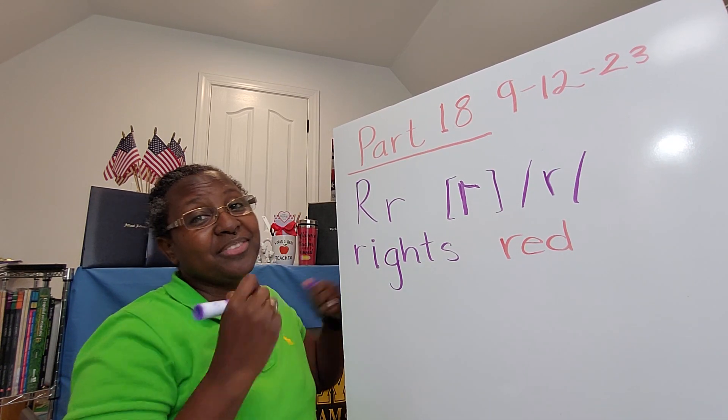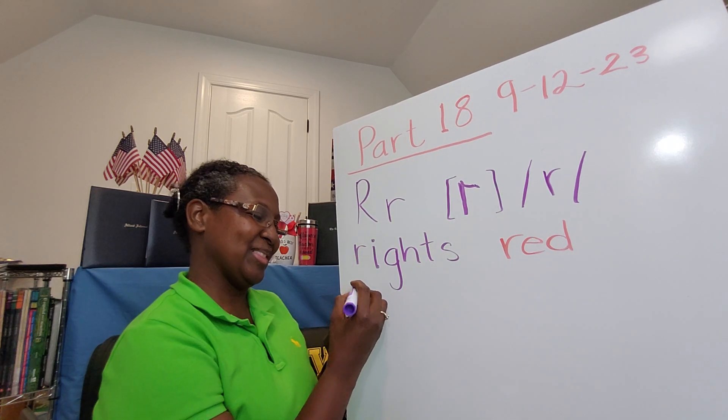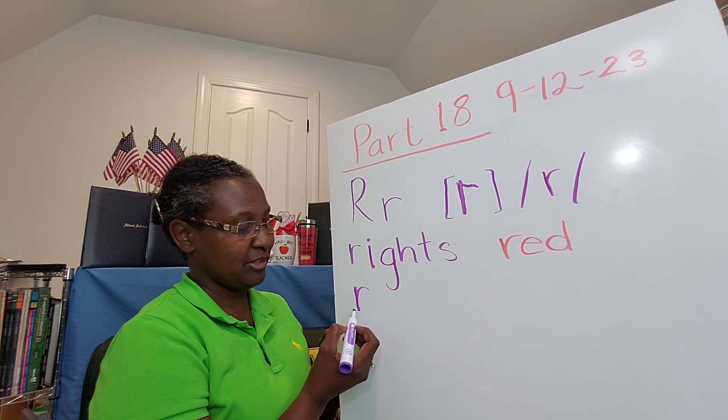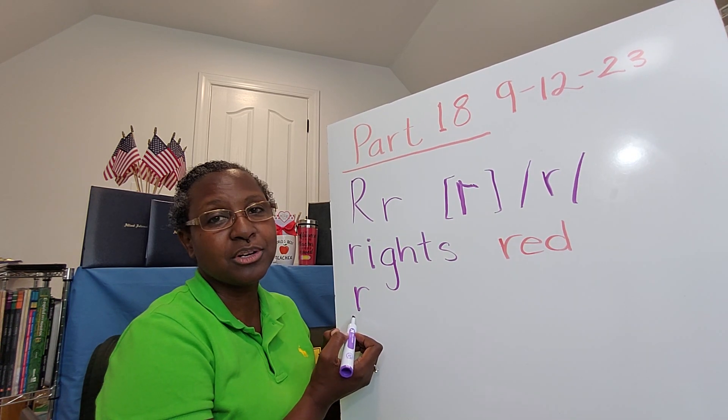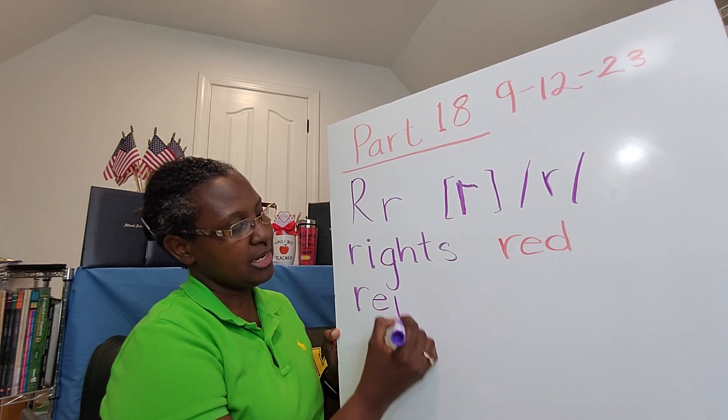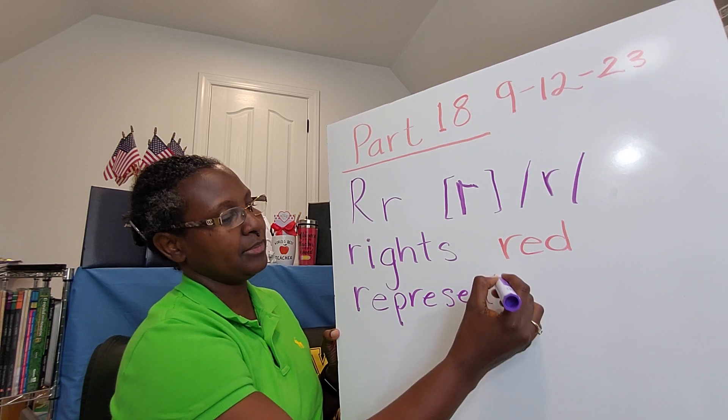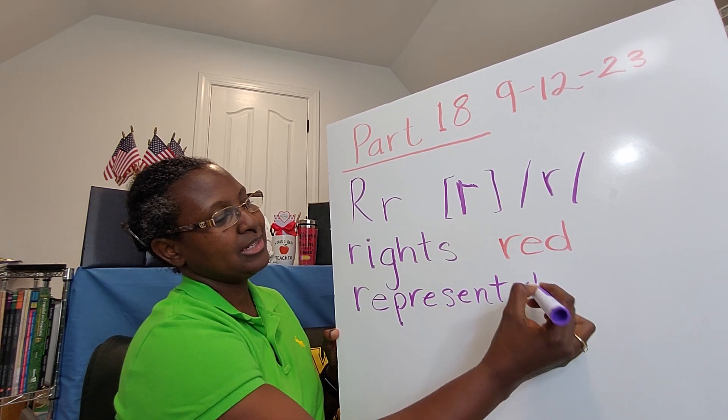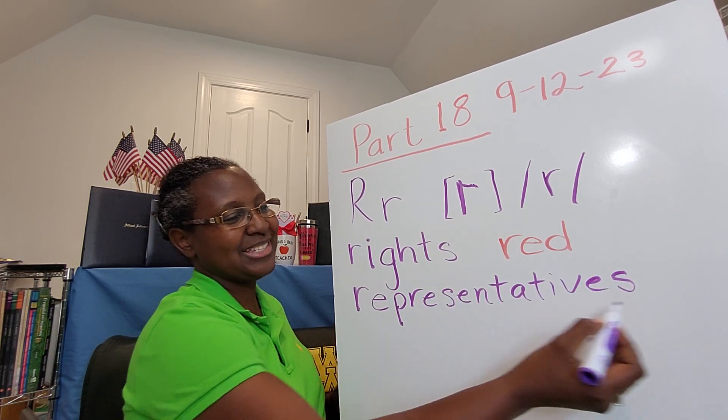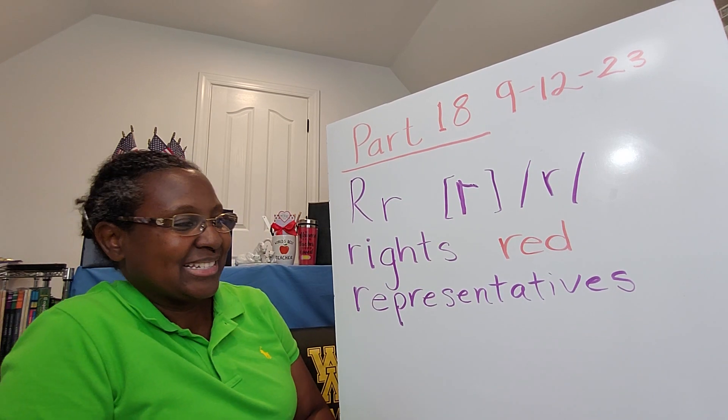Let's look at one that gives a little trouble to almost all of my students, because it's a long, complex word, but we're going to make it easy. First of all, we know it starts with the R. Letter R sound. R-E-P-R-E-S-E-N-T-A-T-I-V-E-S. Representatives.